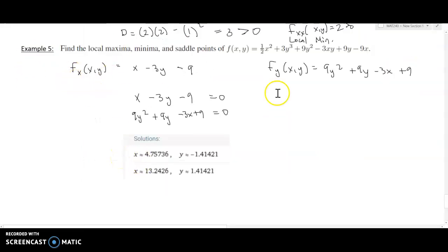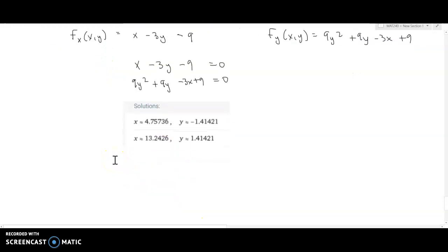So now that we have those, we're going to compute the second partial derivatives and the mixed partial derivative in order to be able to plug these two points in. So our second derivative with respect to x, f_xx of (x,y). Again, we can use Wolfram Alpha to compute this, but this is a pretty nice polynomial. So the derivative of x with respect to x is 1 minus 0 minus 0.